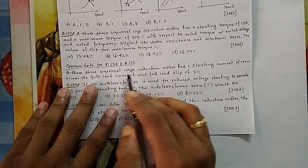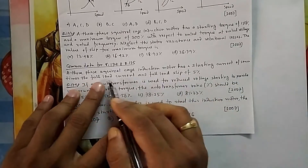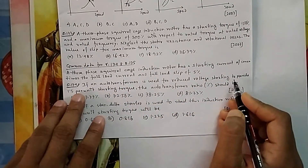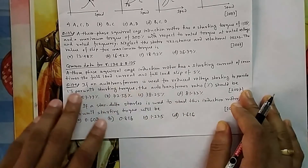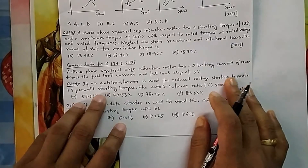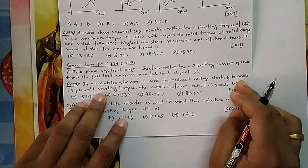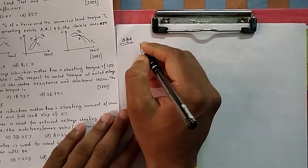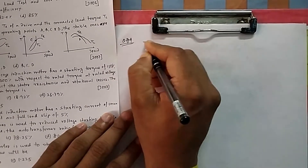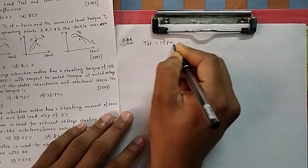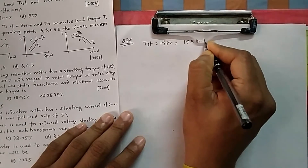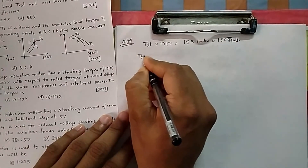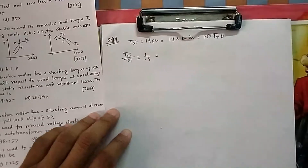Question 174: A three-phase squirrel-cage induction motor has starting current of 7 times the full load current, and full load slip is 5%. If an auto-transformer is used to reduce voltage for starting to provide 1.5 per unit starting torque, find the auto-transformer ratio. 1.5 per unit means the starting torque should be 1.5 times the rated (full load) torque. So T_full_load / T_starting = 1 / 1.5.